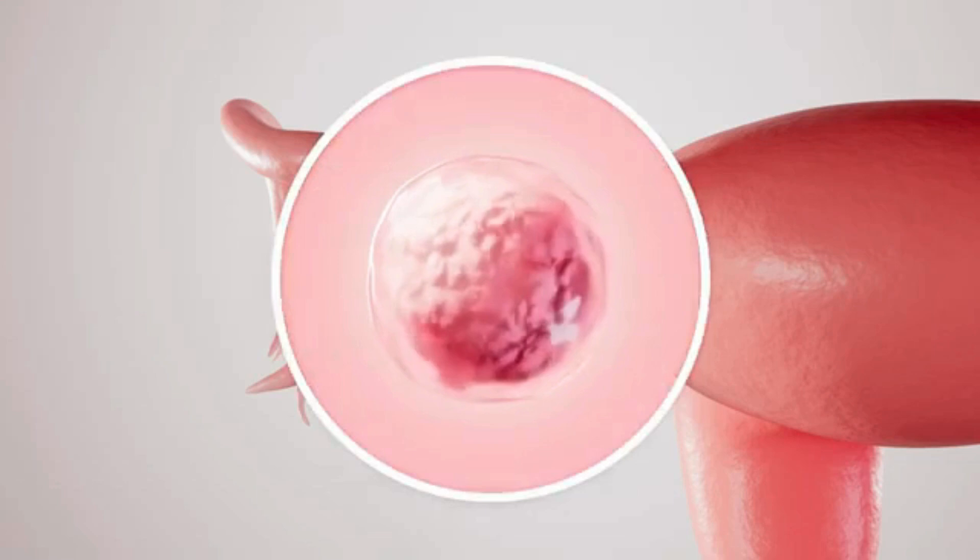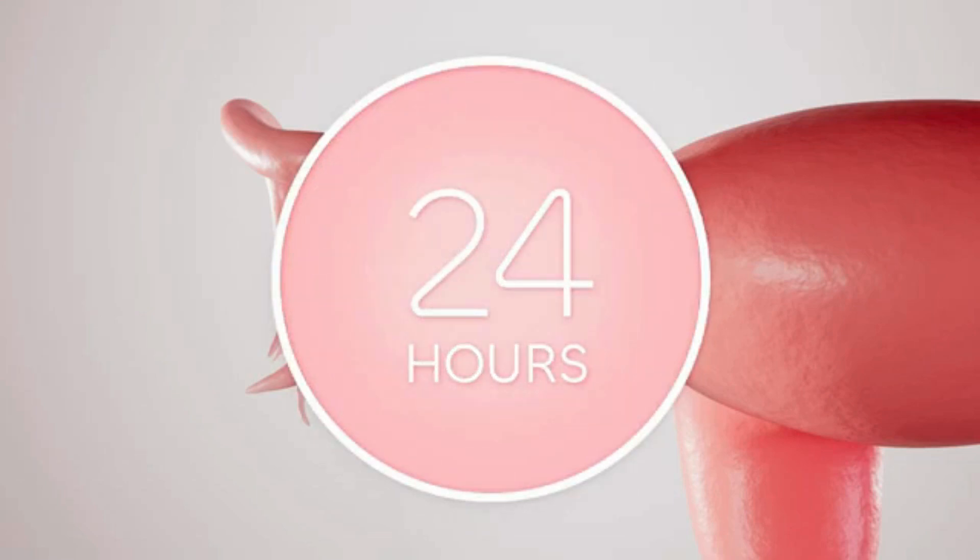To produce a pregnancy, the mature egg must be fertilized by a sperm within 24 hours after ovulation.